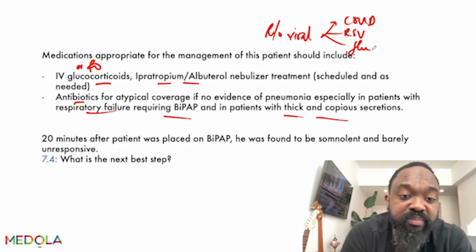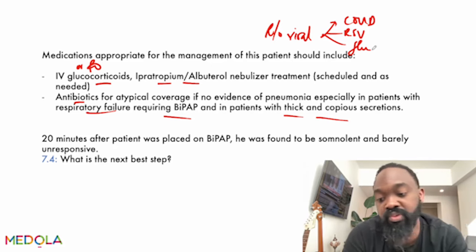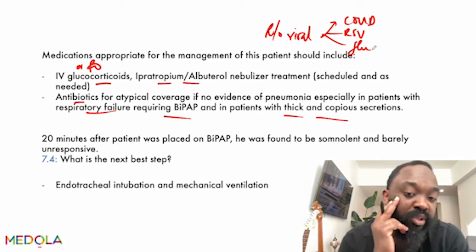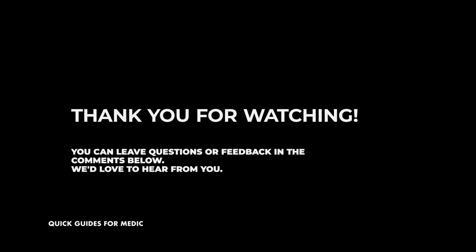Finally, 20 minutes after being placed on BiPAP, the patient is found to be somnolent and barely responsive. You're now worried about whether he can protect his airway. The answer is endotracheal intubation and mechanical ventilation. That concludes the consideration for hypercapnic respiratory failure. It's important not just to know the information but to apply it in case scenarios. Thank you for watching — see you in the next video.